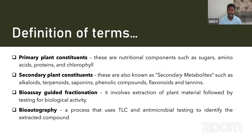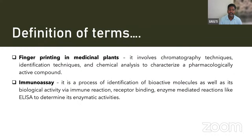Bioautography uses thin layer chromatography combined with antimicrobial testing to identify extracted compounds and determine whether they have antibacterial activity. Fingerprinting in medicinal plants involves various chromatographic identification techniques and chemical analysis to characterize a pharmacologically active compound. Immunoassay is a process of identifying bioactive molecules and their biological activity via immune reactions, receptor bindings, and enzyme-mediated reactions like ELISA to determine enzymatic kinetics.